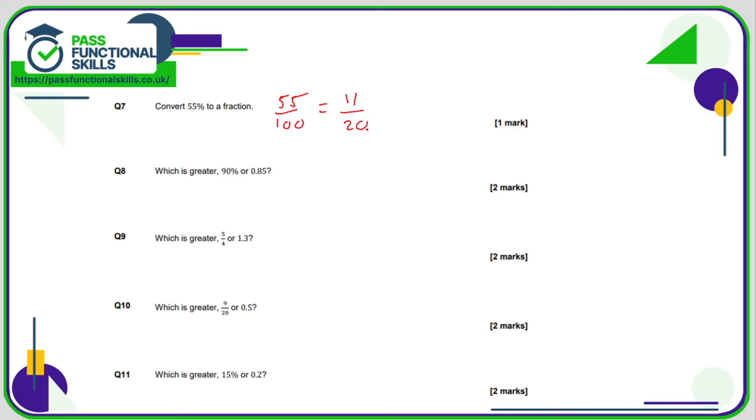If we divide the top and the bottom by five, both these numbers are in the five times table. What are we going to get? Well, 55 divided by 5 is 11, and 100 divided by 5 is 20, so that is our final answer.